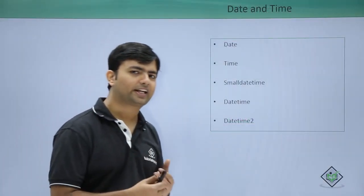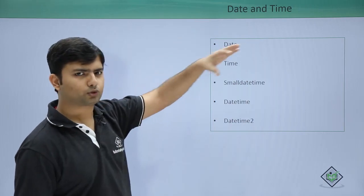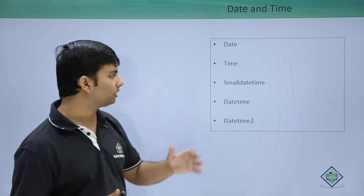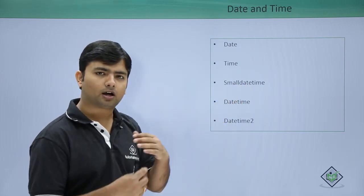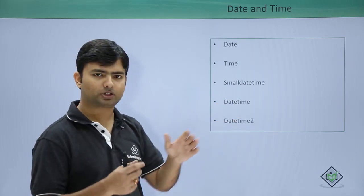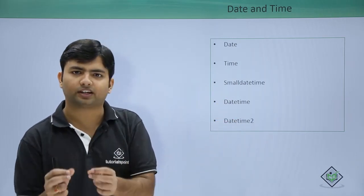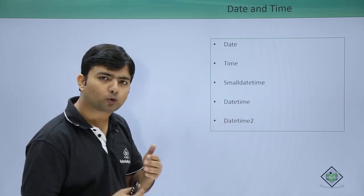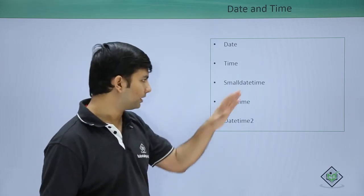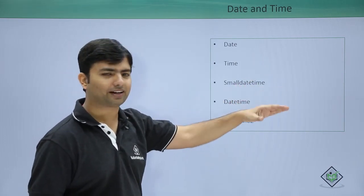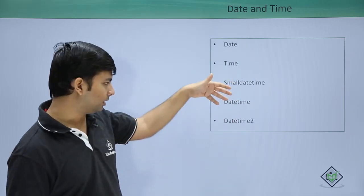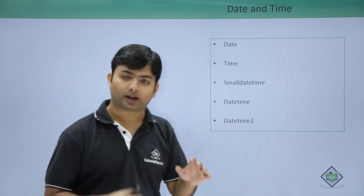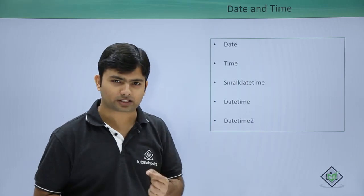Now for datetime data types: use date if you just want to store the date, time if you just want to store the time, and smalldatetime, which takes date and time only up to seconds — not microseconds. But datetime and datetime2 can take many decimal places for seconds. datetime2 has an even bigger range for the time part.